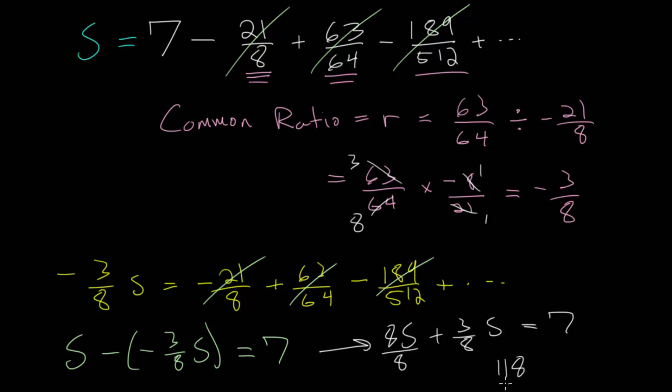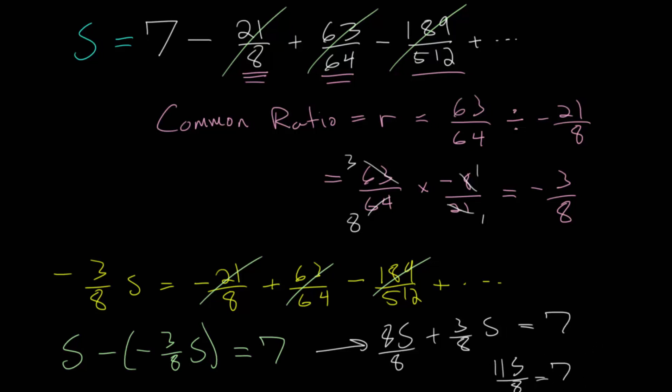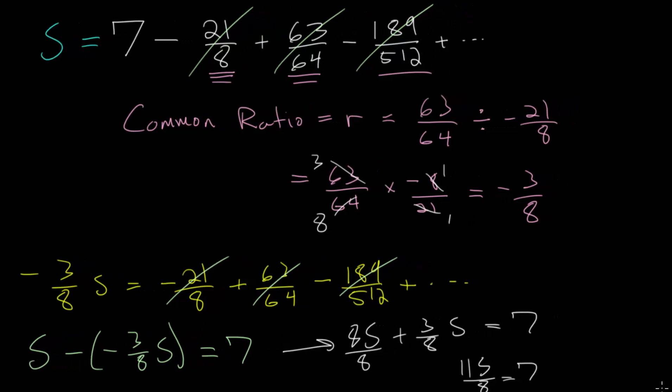And to solve this, we'll just multiply each side by 8. And we get 11 S is 7 times 8, which is 56. And dividing both sides by 11, we get 56 over 11. So, that will be our final answer, which of course is 5 and 1 eleventh.